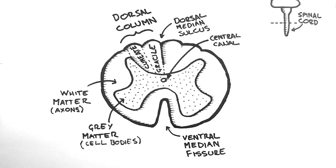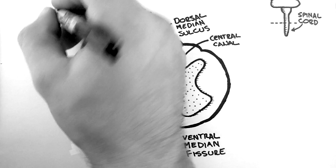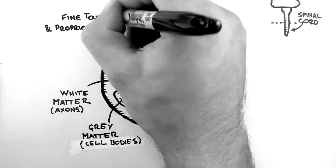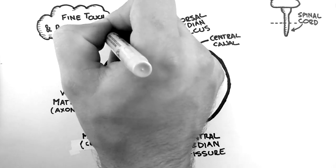The primary function of the dorsal column is to convey the senses of fine touch and proprioception, which means joint position, to the brain.